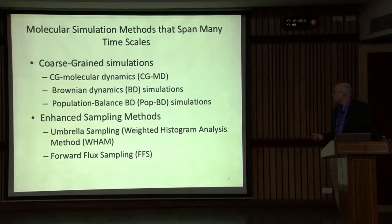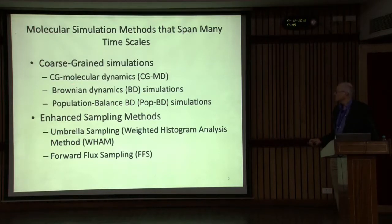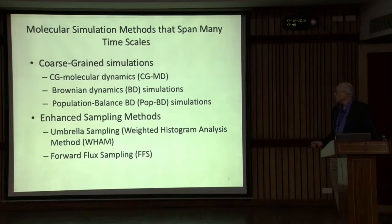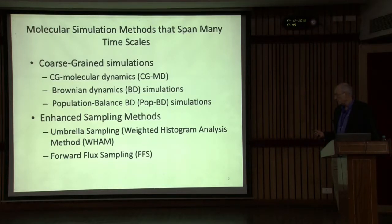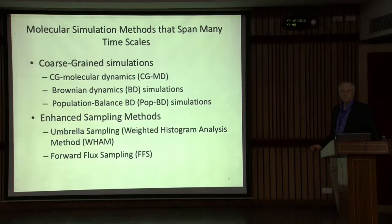The theme is going to be how you go from molecular dynamics — where the molecular scale is intrinsic and important to the problem — while also addressing transport on very long time scales. So you have to bridge from molecular simulations all the way to long-time transport. This is done with a variety of tools: coarse graining such as coarse-grain molecular dynamics, Brownian dynamics, and something new we call population balance Brownian dynamics. Others involve enhanced sampling methods — umbrella sampling coupled with first passage time analysis, and forward flux sampling.